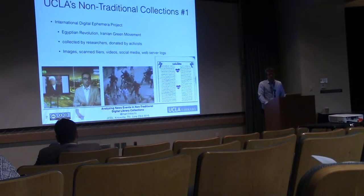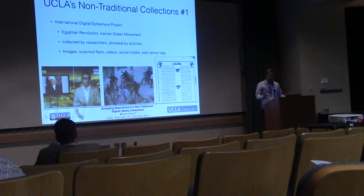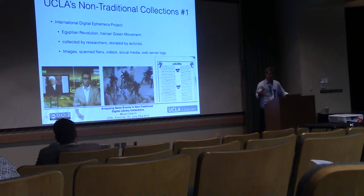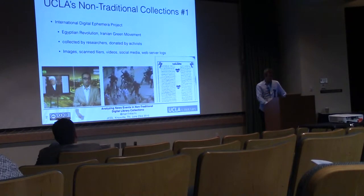When I say non-traditional collections, I mean we've received thousands of cell phone videos taken by activists on the ground. So how do you put this in a digital library? No good idea yet. We've received scanned images, flyers that were handed out during those events. We've also received social media collections and web server logs from activists that potentially prove or indicate malicious behavior by authorities. These are collections we've received somehow, and we want to build interesting services on top to facilitate research on campus and beyond.